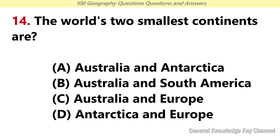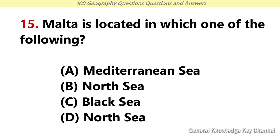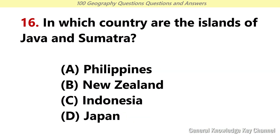The world's two smallest continents are? Answer C: Australia and Europe. Malta is located in which one of the following? Answer A: Mediterranean Sea. In which country are the islands of Java and Sumatra? Answer C: Indonesia.